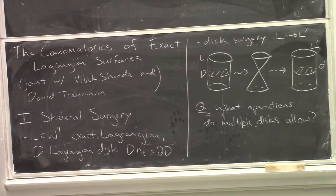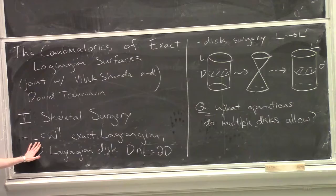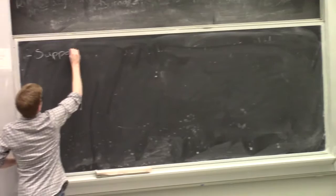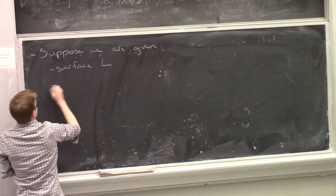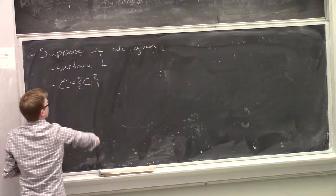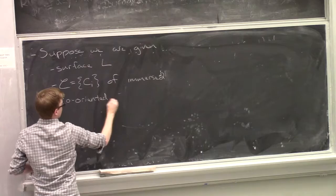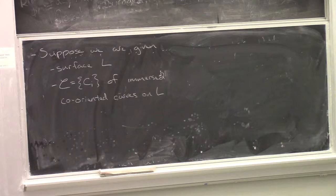To address this question, let me introduce some notation. I'm going to start with L. I'm going to forget that it came to me in a symplectic manifold. I'm just going to think, suppose I had a topological surface. So suppose we were given a surface L and a collection, I'll write script C, of immersed co-oriented curves. For the moment I'll just put aside all symplectic geometry.